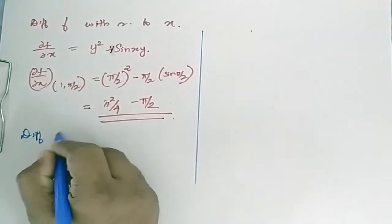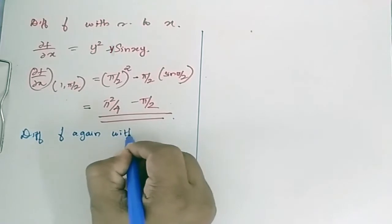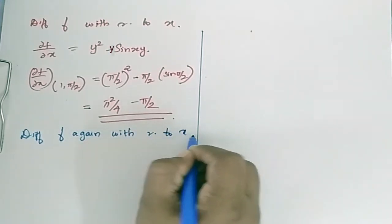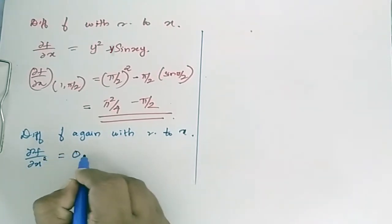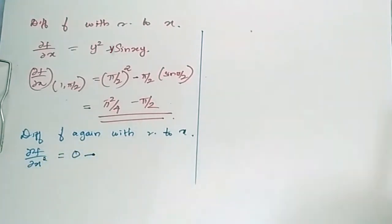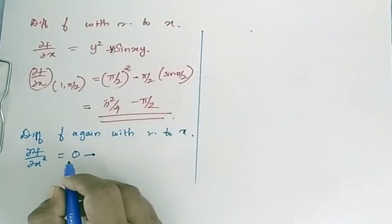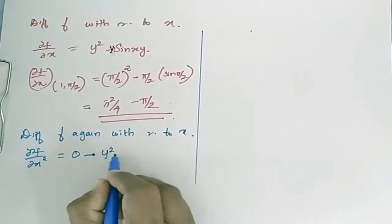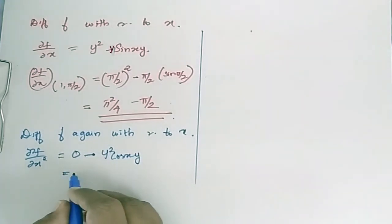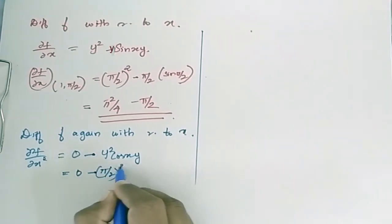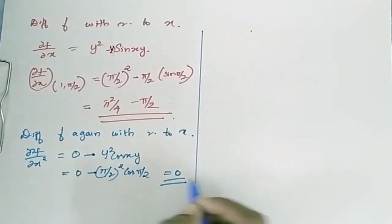Differentiate f again with respect to x. So ∂²f/∂x² = 0 − y²·cos(xy). At (1, π/2): ∂²f/∂x² = −(π/2)²·cos(π/2), which is equal to 0.